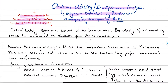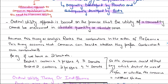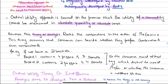The ordinal utility approach is based on the assumption that the utility of a commodity cannot be measured in absolute quantity or in absolute numbers. Instead, this theory provides an alternative approach: it will rank the different combinations or bundles of goods in the order of preference — for example, 'I prefer this bundle over that one.'